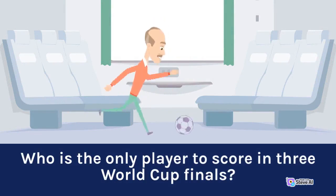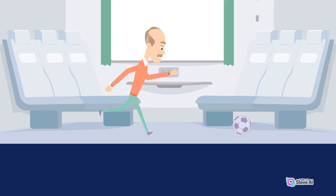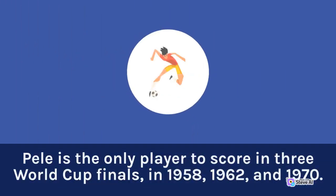Who is the only player to score in three World Cup finals? Pelé is the only player to score in three World Cup finals, in 1958, 1962, and 1970.